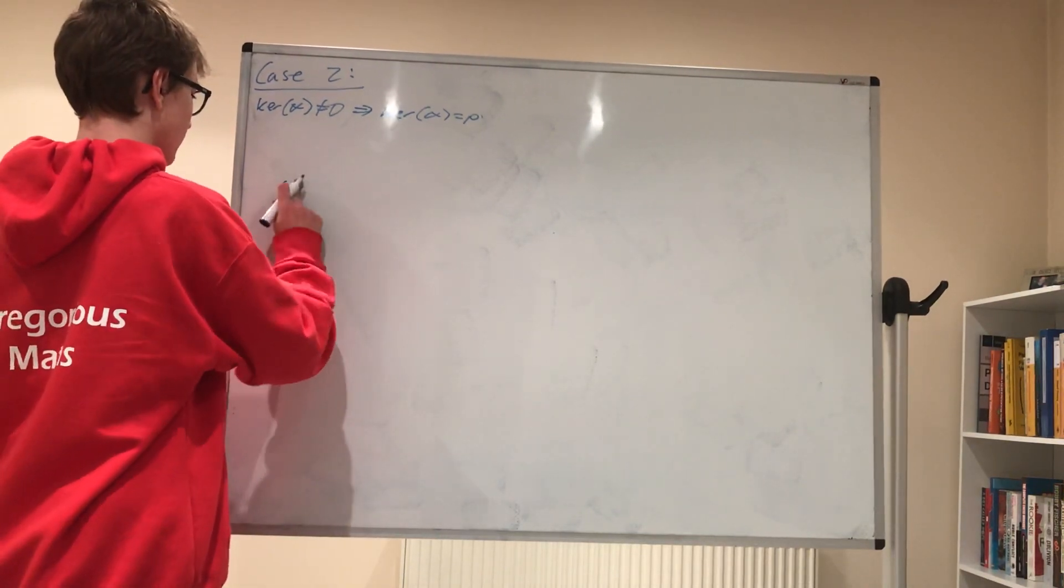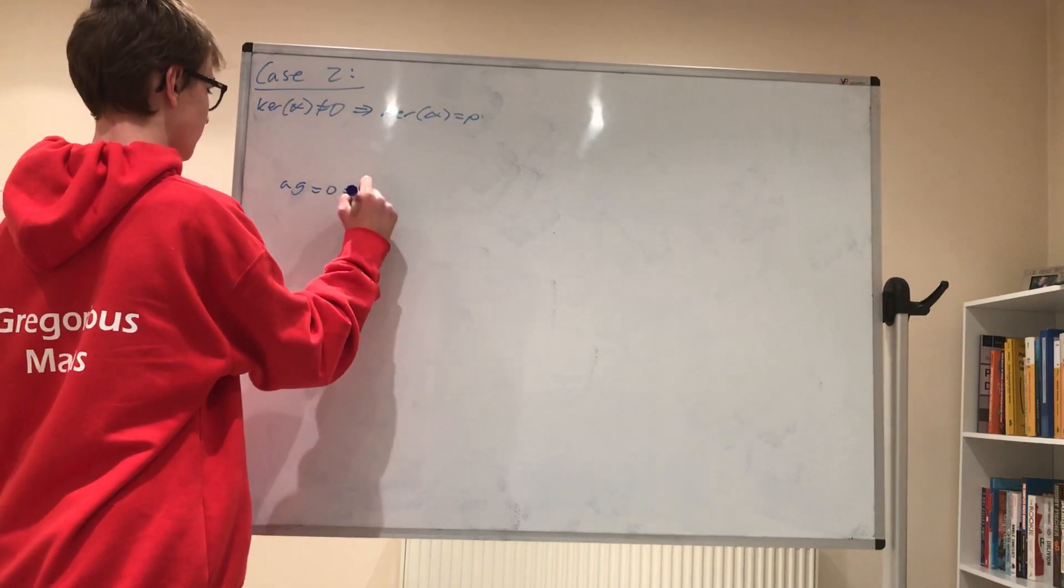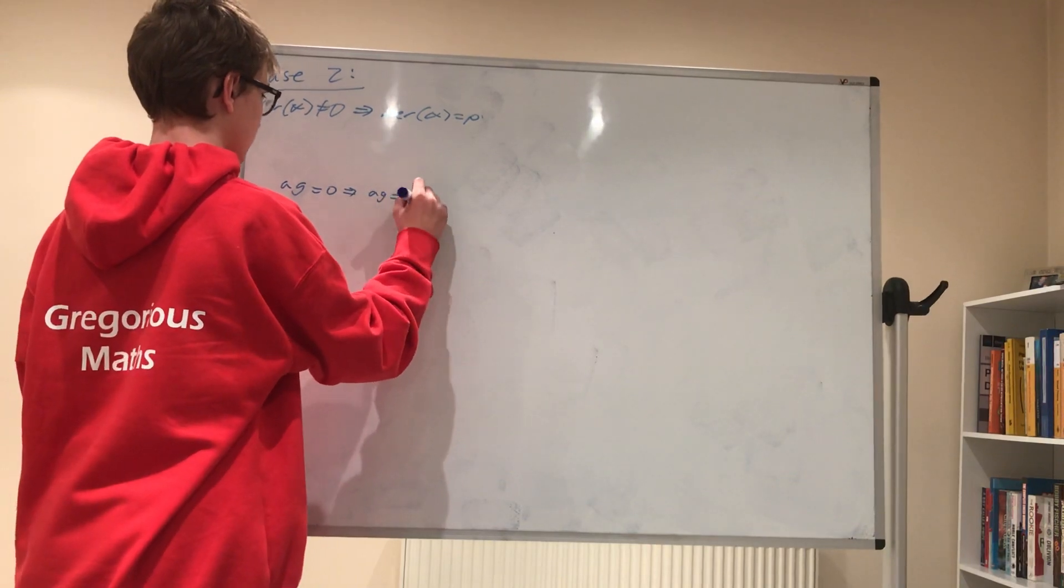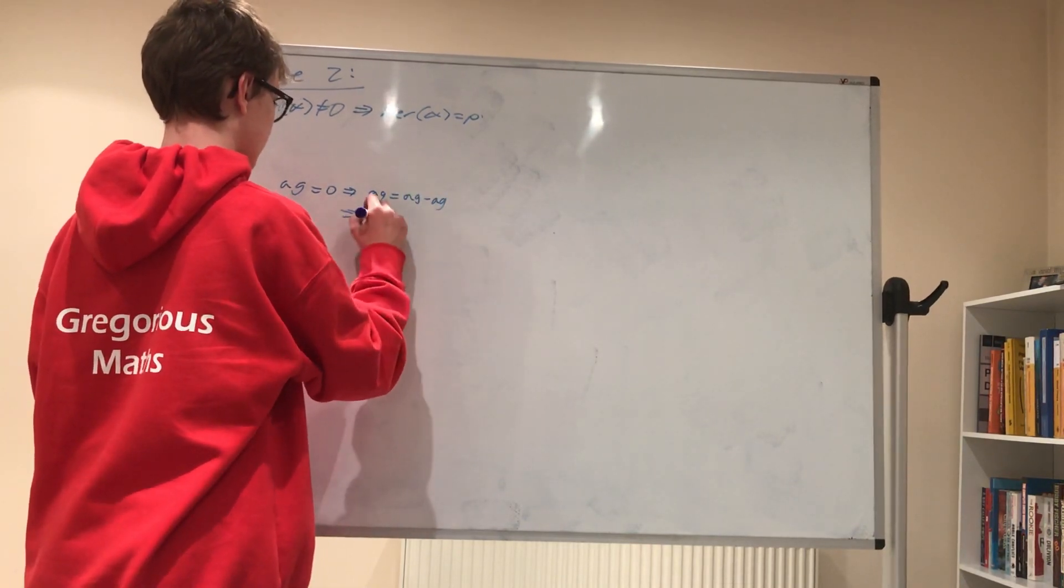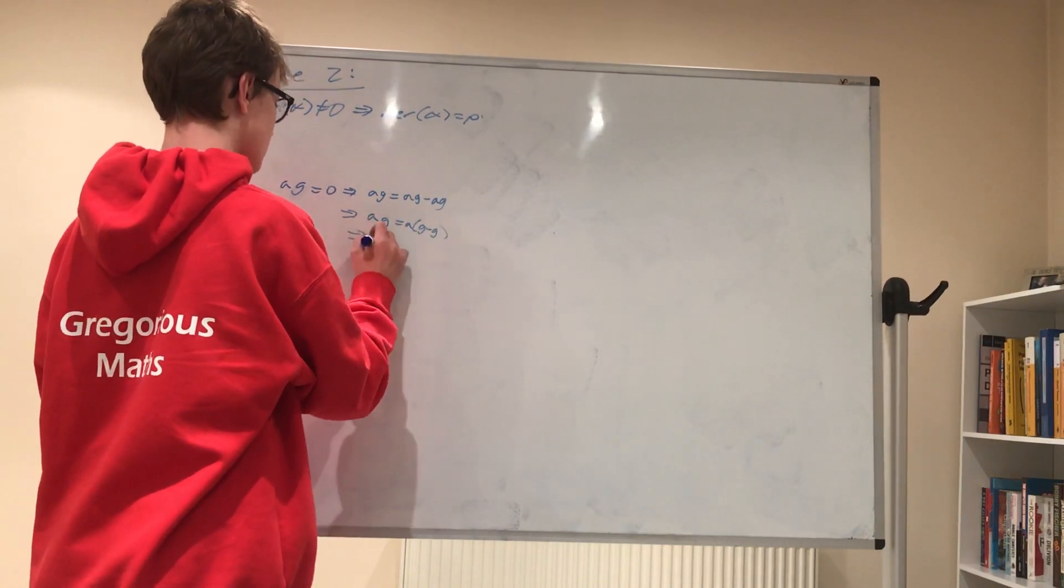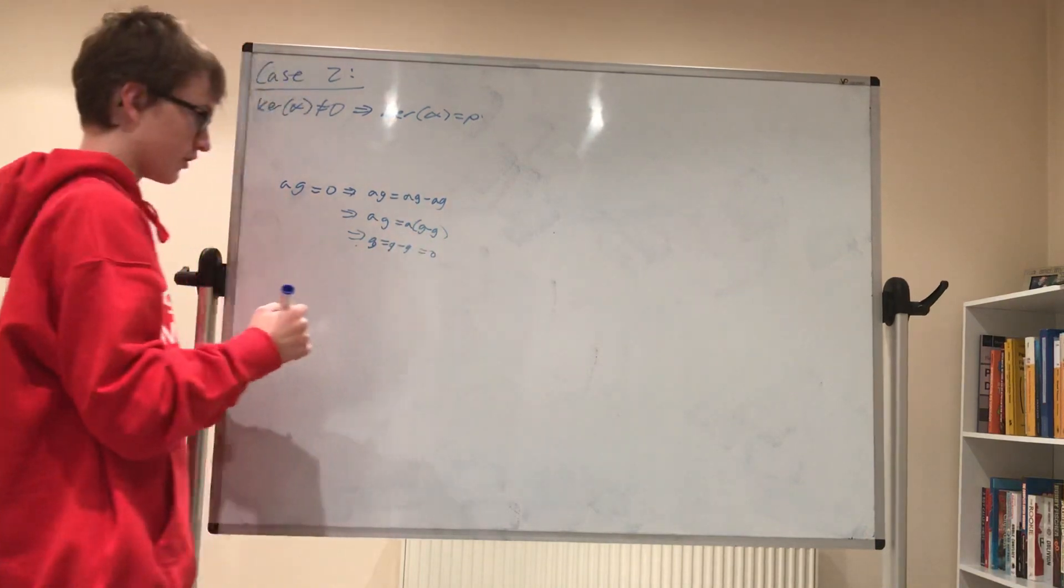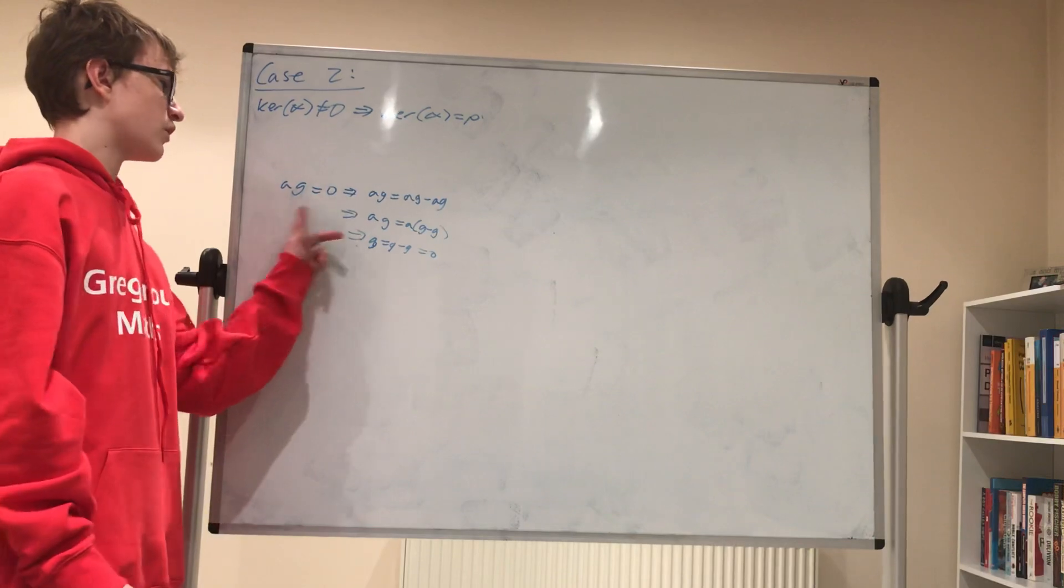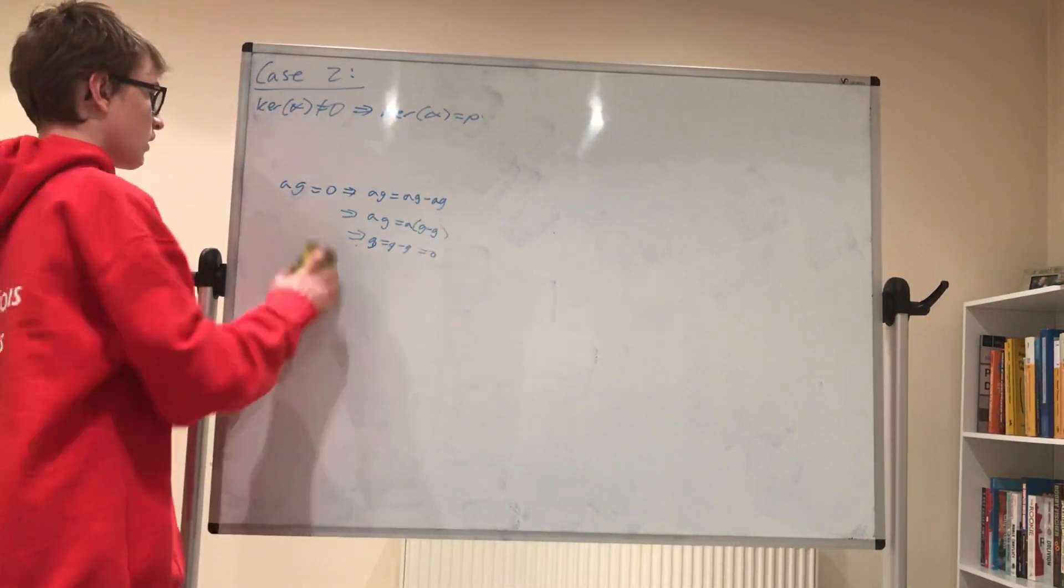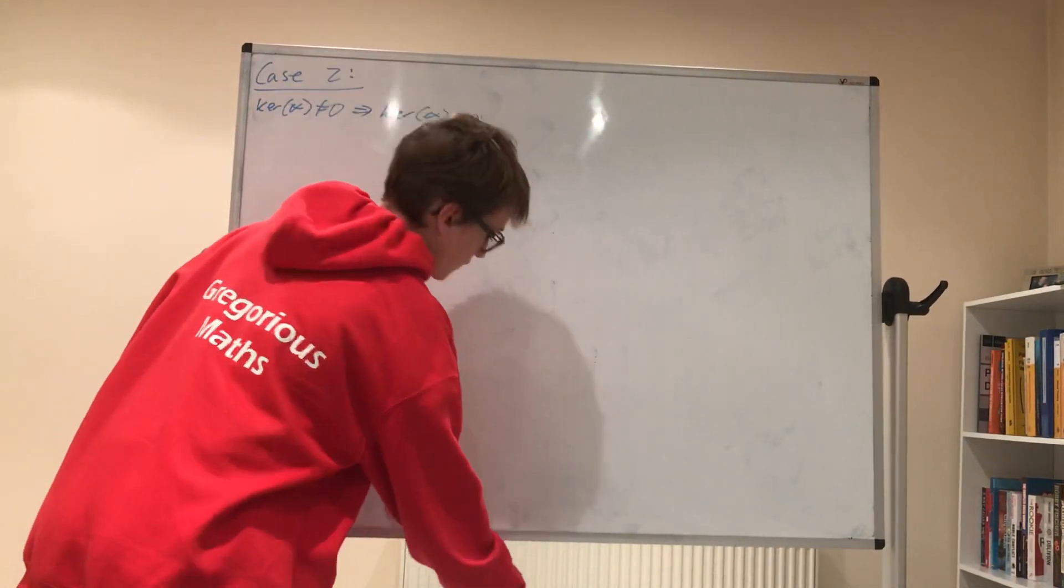So if ag equals zero, then this implies that ag equals ag minus ag, which implies that ag equals a times g minus g, which implies that g equals g minus g equals zero. And similarly, you can show that a equals zero. So one of these must be zero. And if this were not a prime, then there would be two non-zero elements multiplying together to be a prime. So it has to be a prime.